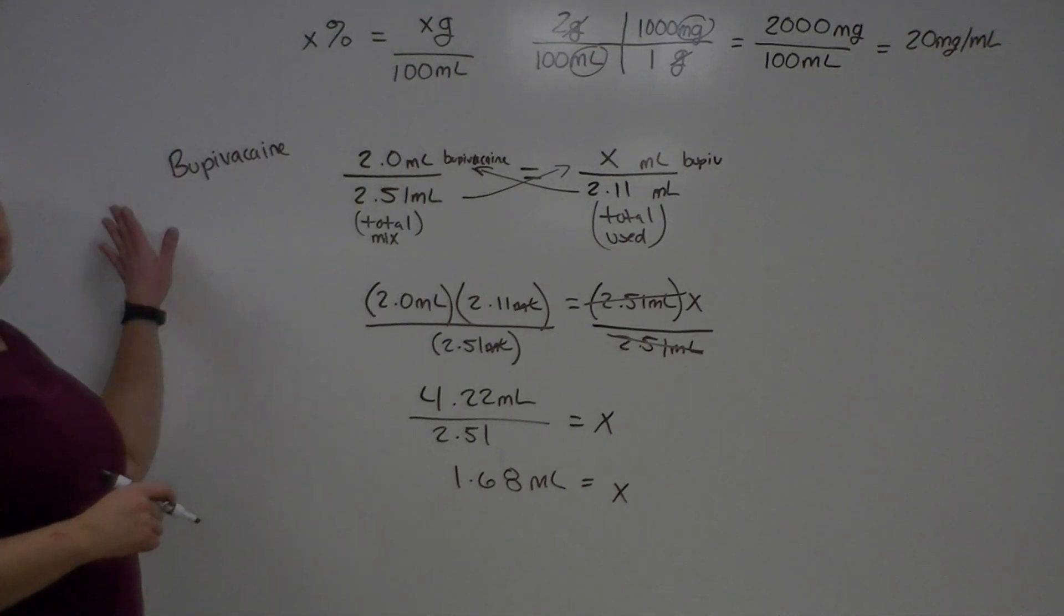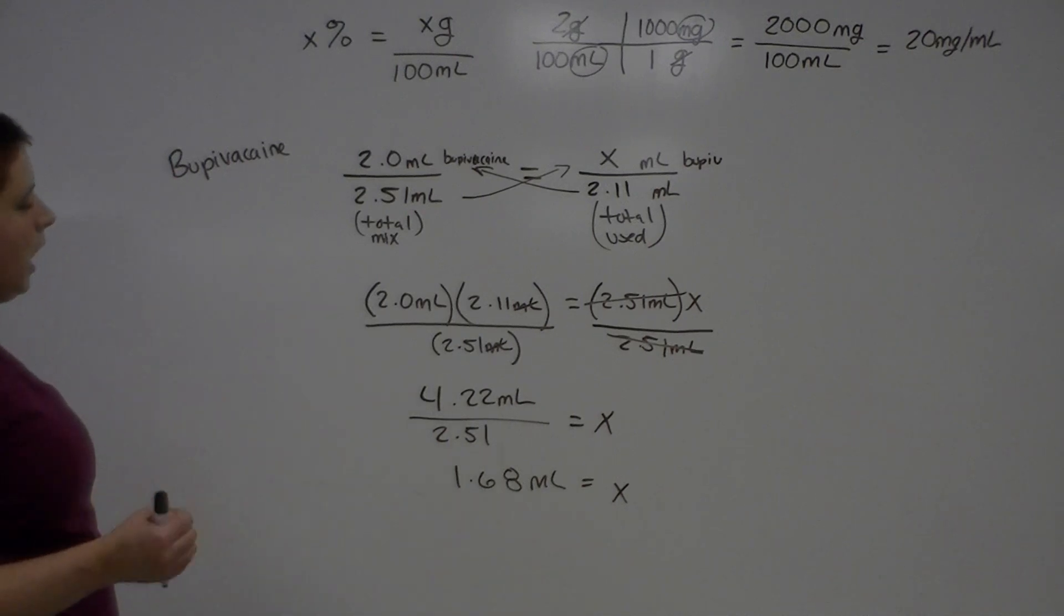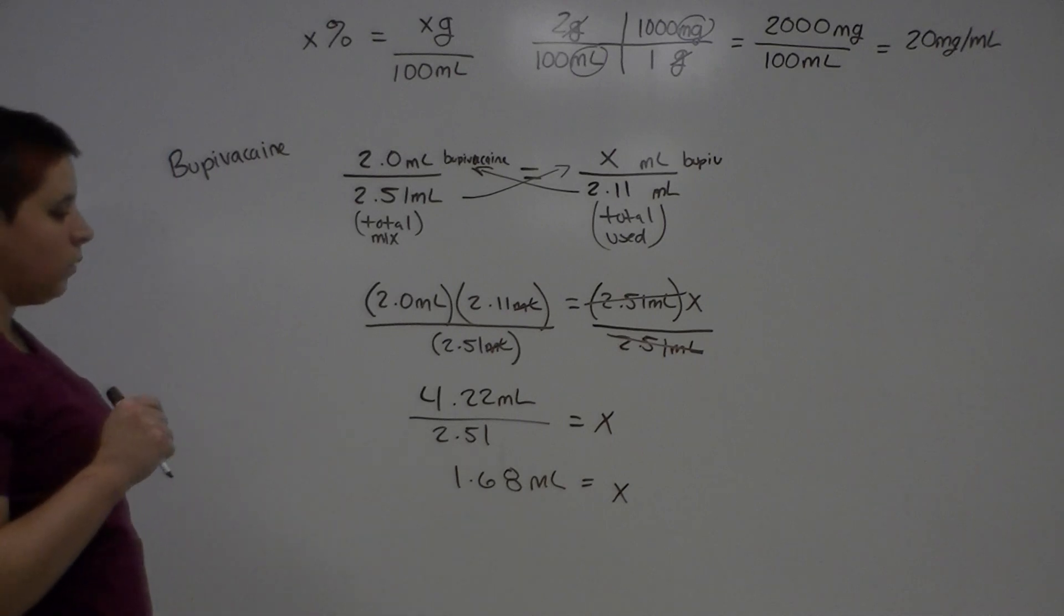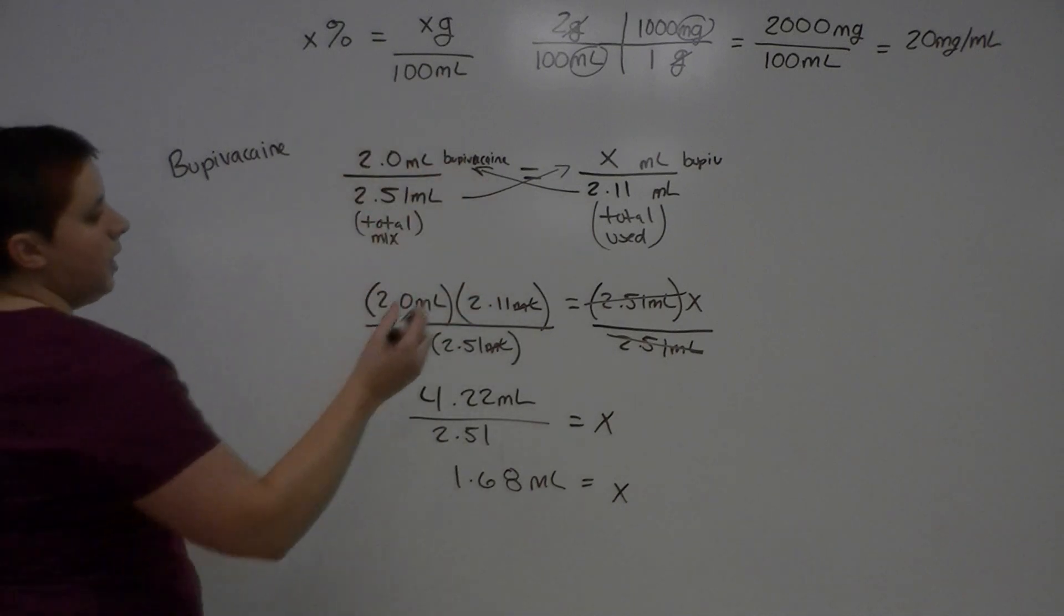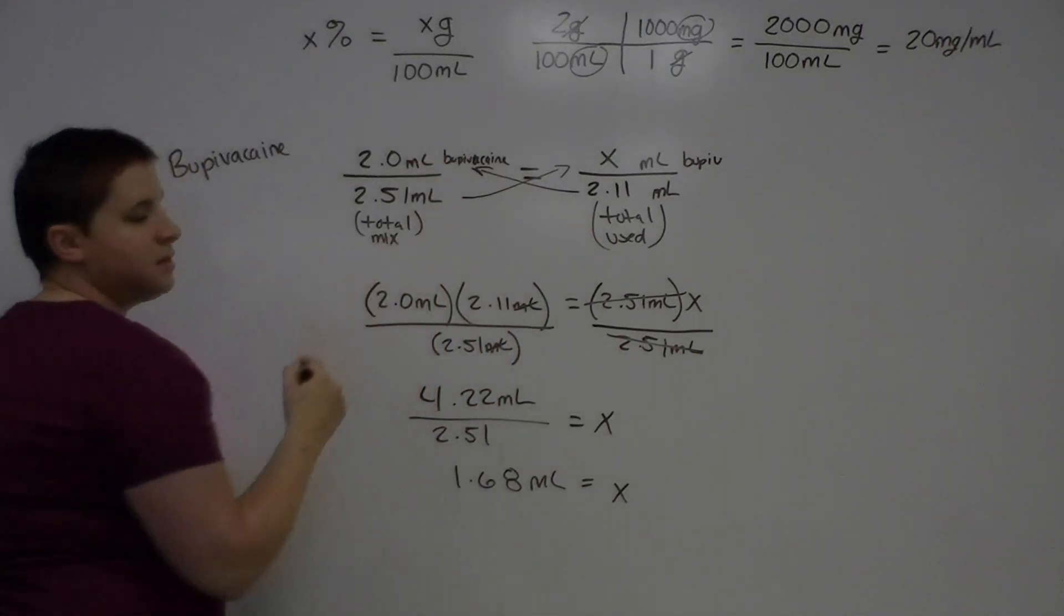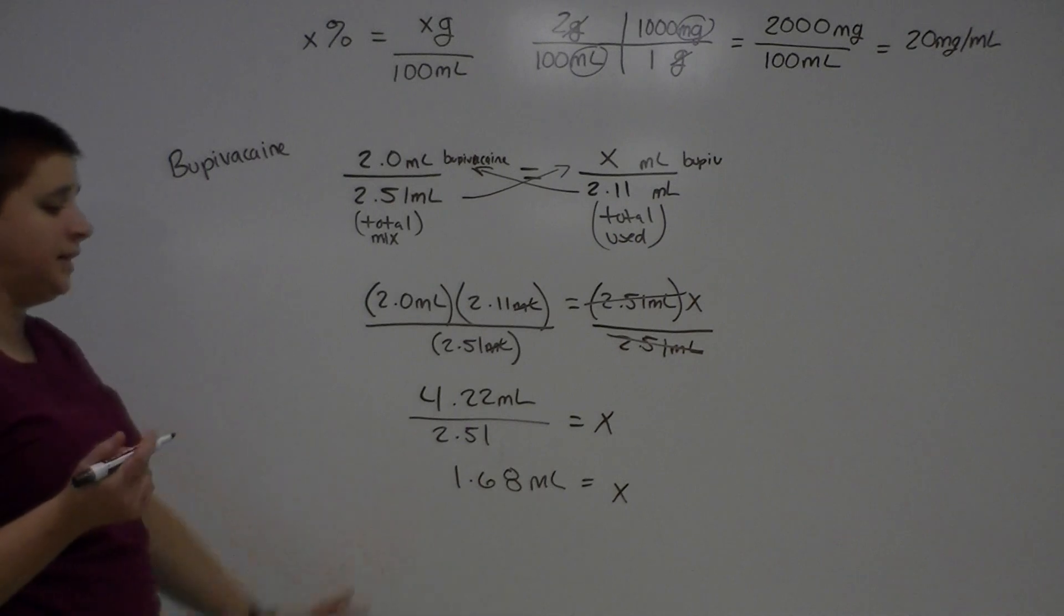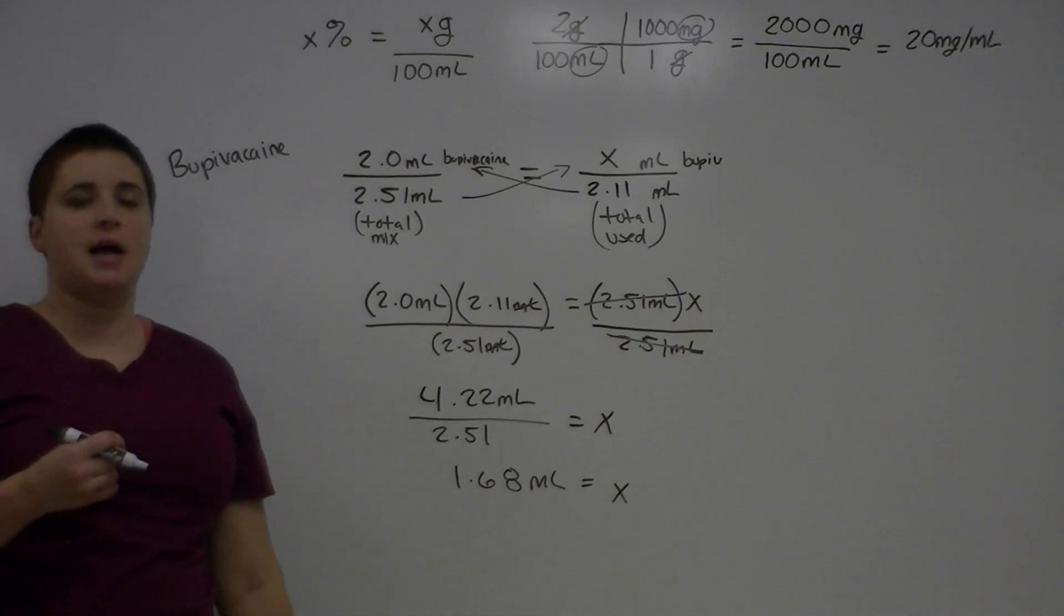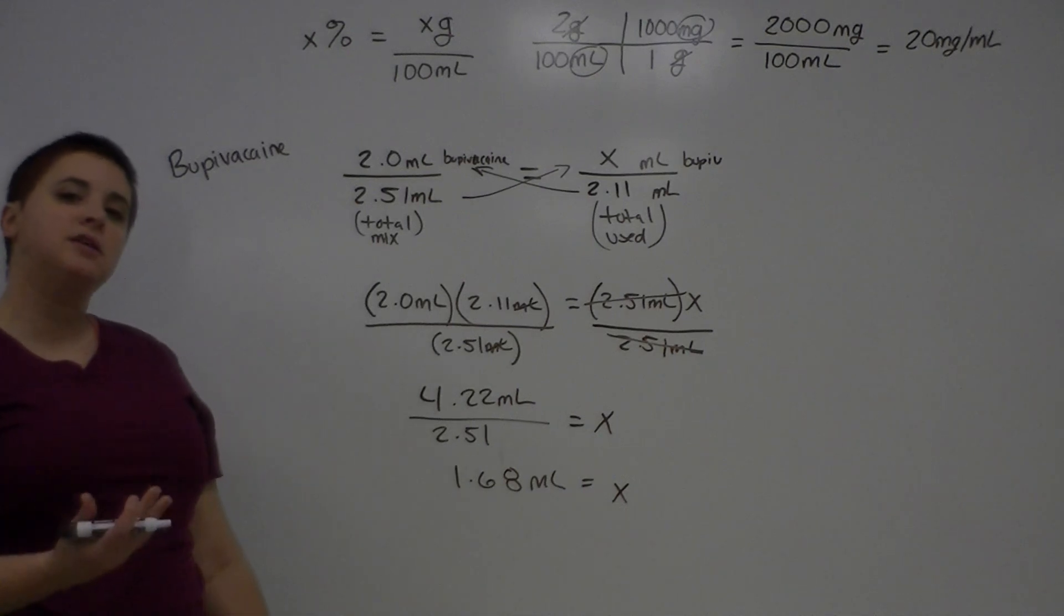So again, this is milliliters of bupivacaine, which is why I like to label it so I know what I'm working on. So 1.68 milliliters of bupivacaine is what we gave the patient. For some of you who are a little quicker with your cross-multiplying, and you see this, and you immediately think about your cross-multiplication, you could bypass this step where it's this times this divided by this. You're more than welcome to do it that way, too, and you could show that work. This is just the more written-out process. So from here, now I know how many milliliters I use, but the anesthesia sheet is going to ask for milligrams.